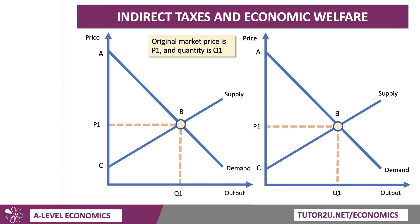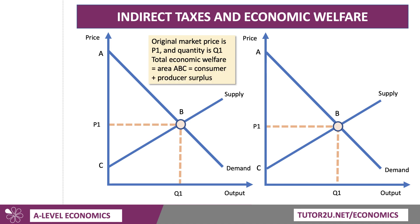I'll be using the right-hand diagram in a little while, but let's focus on the left-hand diagram. Think about a market where the original market price and quantity is P1 and Q1. The market is in equilibrium at point B. Before we look at the tax, the total welfare is the area A, B, C, which is the sum of consumer and producer surplus.